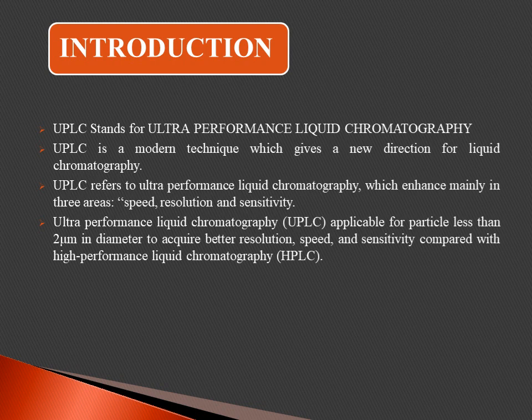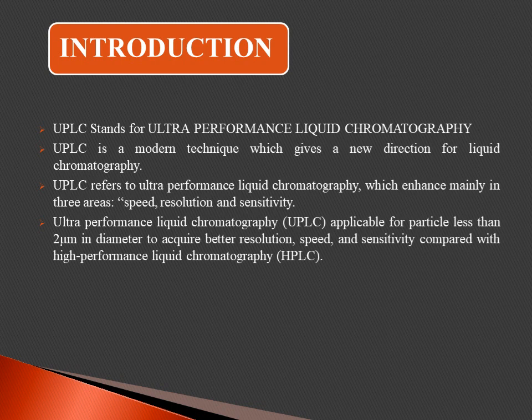UPLC offers more sensitivity and is applicable for a particle size less than 2 micrometers in diameter to acquire better resolution. In UPLC, the stationary phase uses silica with a particle size of 0.5 to 2 micrometers, compared to HPLC where the particle size is 3 to 10 micrometers. This gives UPLC much higher speed, resolution power, and sensitivity. This is called Ultra Performance Liquid Chromatography.